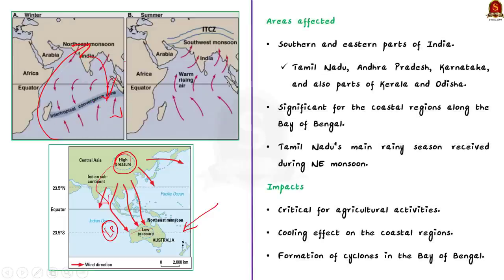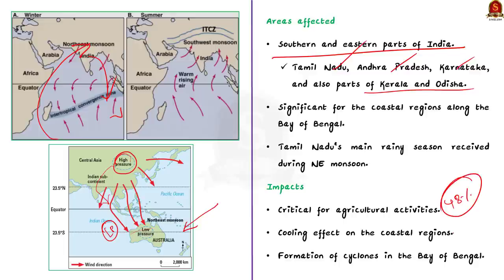The northeast monsoon primarily affects the southern and eastern parts of India, including Tamil Nadu, Andhra Pradesh, Karnataka, parts of Kerala and Odisha. It is especially significant for coastal regions along the Bay of Bengal. Tamil Nadu receives 48% of its annual rainfall during the northeast monsoon. The monsoon is critical for agricultural activities, primarily for rice crops, has a cooling effect on coastal regions of south India, and is associated with the formation of cyclones in the Bay of Bengal, which can bring heavy rainfall and damage to coastal regions.